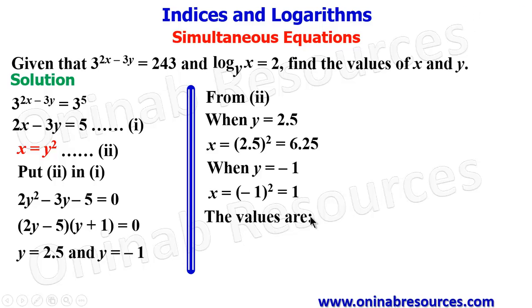So the values of x and y will now be the first coordinate is 6.25, 2.5. We have it as 6.25, 2.5. And x is 1, y is negative 1. So we have it as 1, negative 1. So these are the values of x and y as required in the problem.